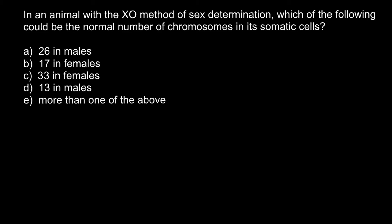Today I have prepared a video about the XO sex determination system. I'm going to explain how it is different from the XY sex determination system, and also whether it is the same or not as the haplodiploidy system. Today's question is: in an animal with the XO method of sex determination, which of the following could be the normal number of chromosomes in its somatic cells?